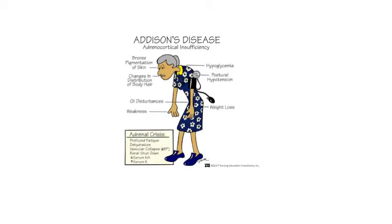Hyperpigmentation is the physical finding most characteristic of Addison disease. It results from cross-reactivity between the ACTH produced by the corticotrophs and the melanocortin-1 receptor on keratinocytes. Hyperpigmentation is usually generalized over the entire body and can be found in palmar creases,